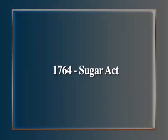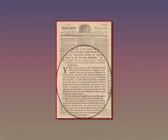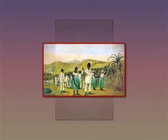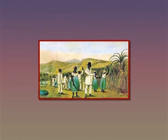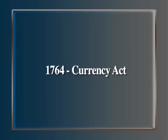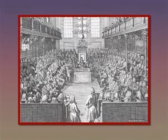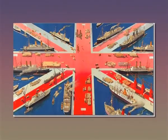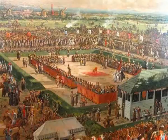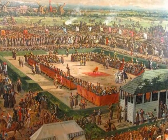1764: The Sugar Act raised revenue by increasing duties on sugar imported from the West Indies. It placed a direct financial strain on the colonial population. 1764: The Currency Act. The English Parliament argued that the colonial currency had caused a devaluation which harmed British trade. The English government banned American assemblies from issuing paper bills or bills of credit.